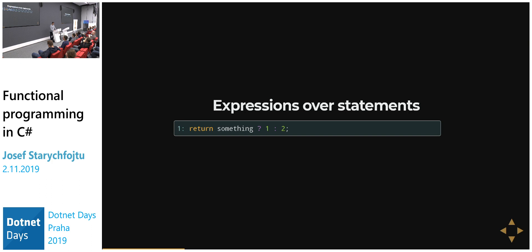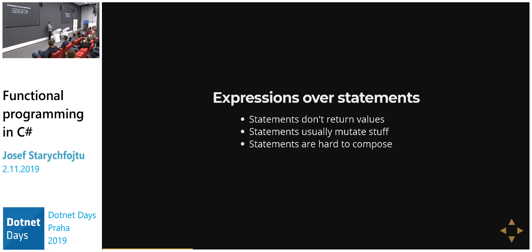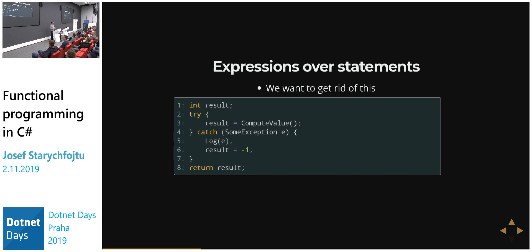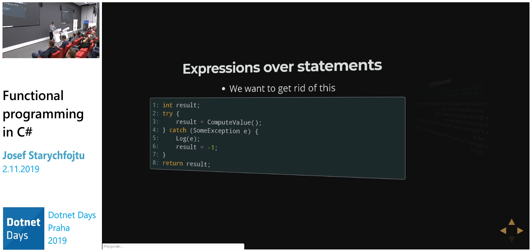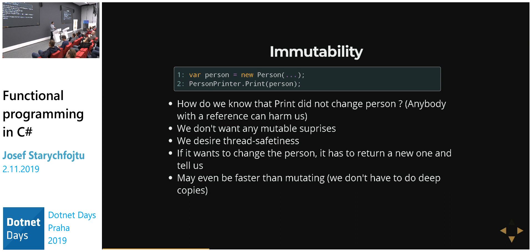There's a real difference between expressions and statements. Statements don't return values - they usually mutate stuff and are hard to compose. You can have nested ternary operators but nested statements are pretty hellish. We solved the if-example with the ternary operator, but how would you solve a try-catch? That's a statement and there's no language-level support for a try-catch expression. We want to get rid of this - we'll do it later in the talk.